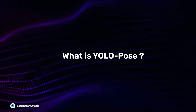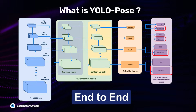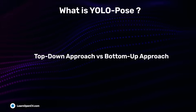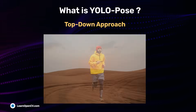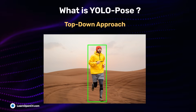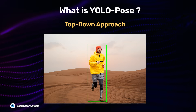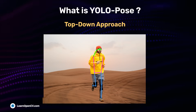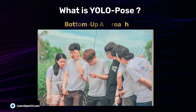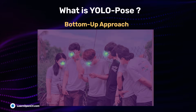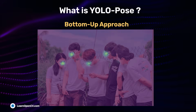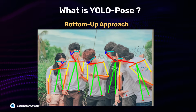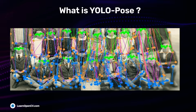What is YOLO Pose? It is an end-to-end pose estimation model. To understand this, let's discuss the two general approaches. In the top-down approach, we first detect persons in the image and then use those bounding boxes to find keypoints — giving good results but becoming slow with many people. The bottom-up approach uses heat maps to find keypoints and then groups them to each person, making it fast but less accurate in crowded scenes.